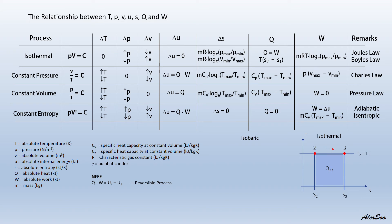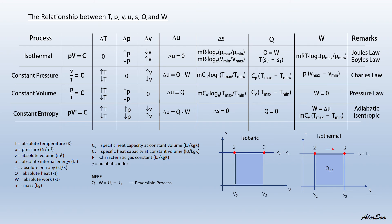For the isobaric process, we refer to a PV diagram with P on the y-axis and V on the x-axis. It is a constant pressure process shown as a horizontal line from point 2 to point 3. The change in volume from V2 to V3 and the area under the process path represents work done. An increase in volume gives work output (expansion, work done by the system), while a decrease in volume is compression — work input, work done on the system.